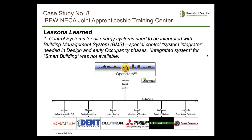They retrofitted the fixed windows with automatically operating windows controlled by the central system. They added roof monitors with exhaust vents for cross ventilation. With a big floor plate, it's important to get air moving through the intermediate rooms, so they used air transfer ducts for that, along with distributed HVAC units for mixed mode operation.